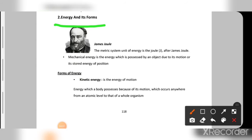The metric system unit of energy is the Joule, named after James Joule. Mechanical energy is the energy possessed by an object due to its motion or stored energy of position. There are two main forms: kinetic energy and potential energy, and mechanical energy is the combination of both.